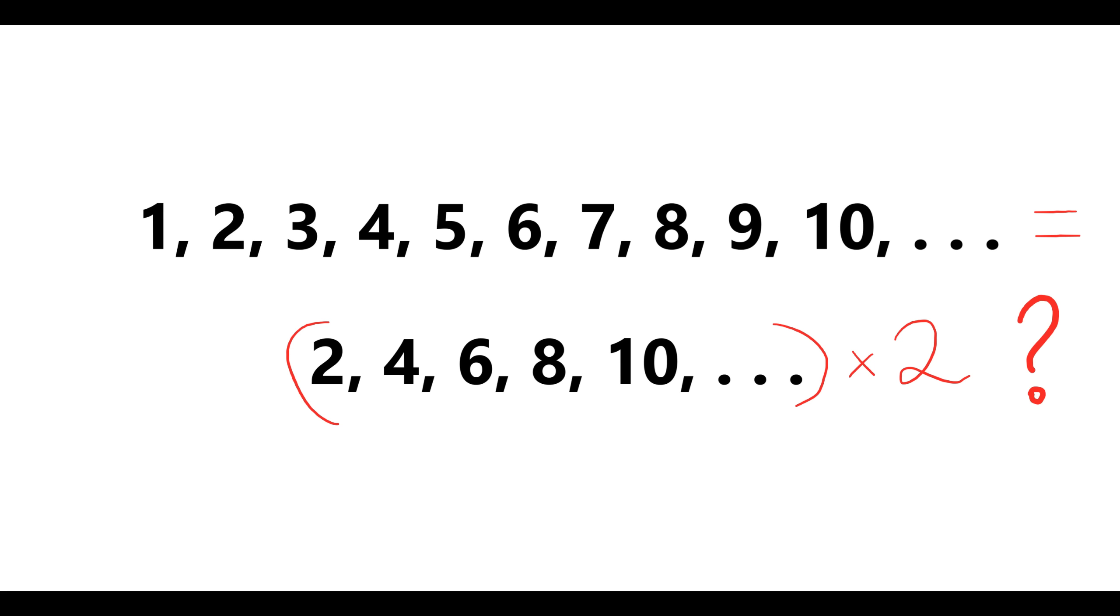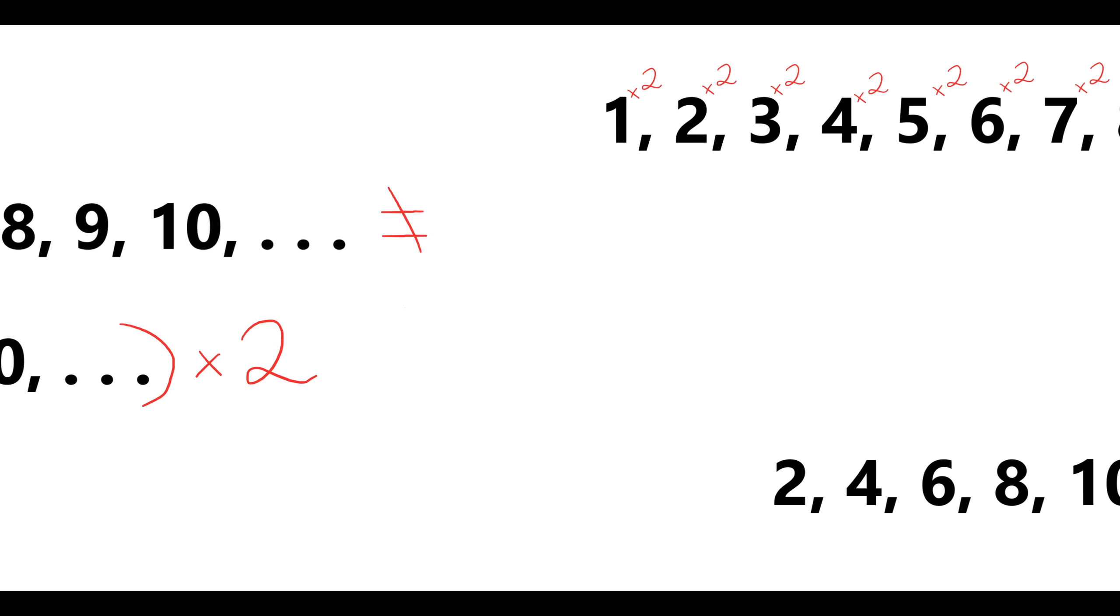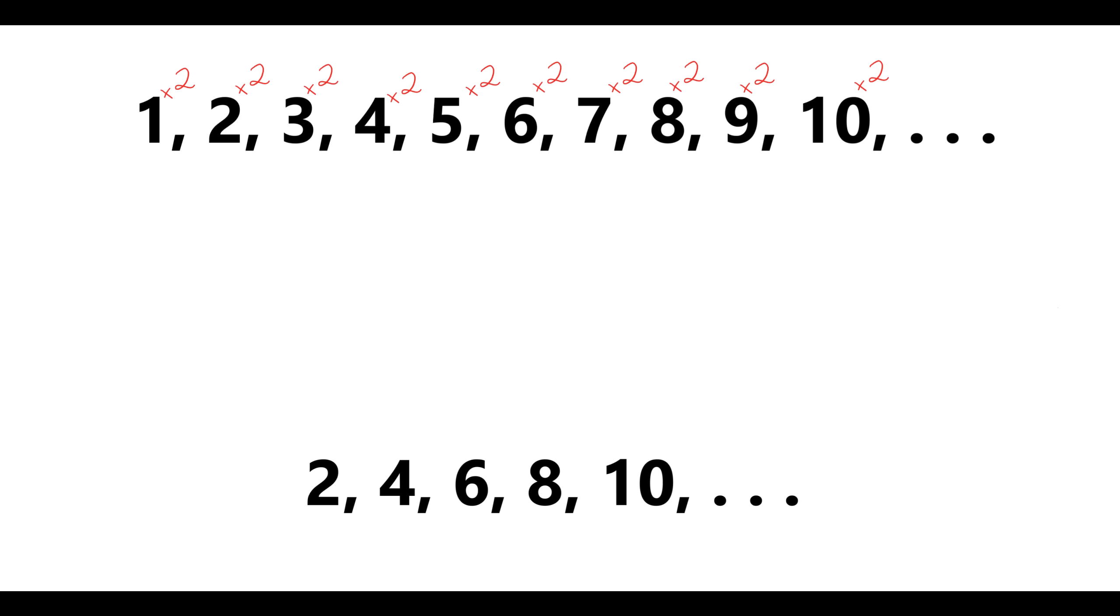Sure, that's a natural thing to think when you compare these sets, but I'm going to show you why that is incorrect. So let's just take a look at the first set with all the numbers. What I'm going to do now is go through this list and double every element in it. What does this give us?